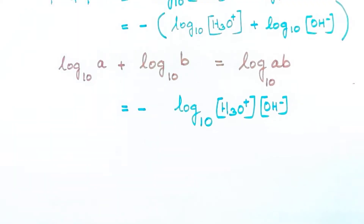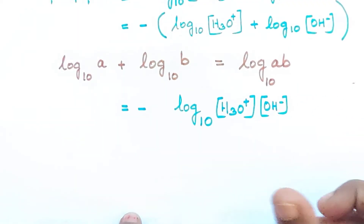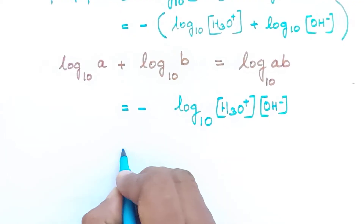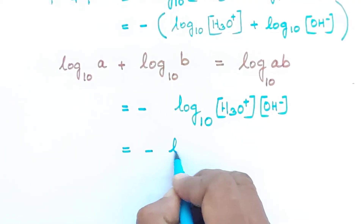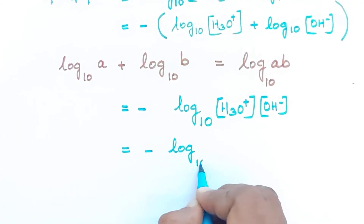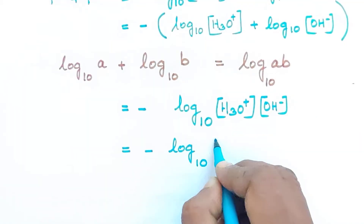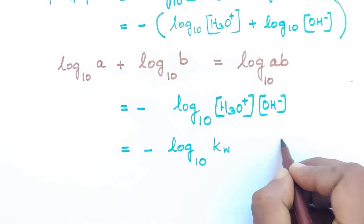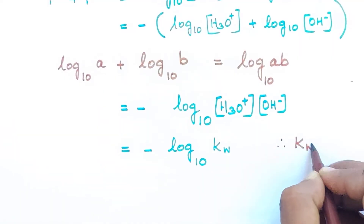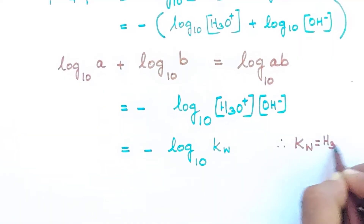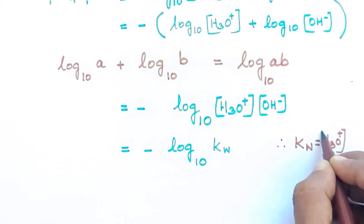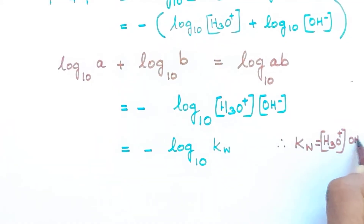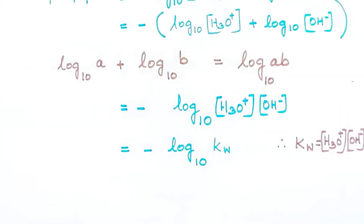So we substitute Kw into the expression. That means pH plus pOH is equal to minus log base 10 of Kw, because Kw is equal to H3O⁺ concentration multiplied by OH⁻ concentration.